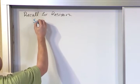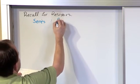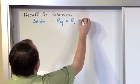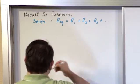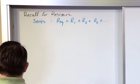then what we have is the equivalent resistance was just equal to R1 plus R2 plus R3 plus dot dot dot. So that was just basically, if they're in series, you add them up.